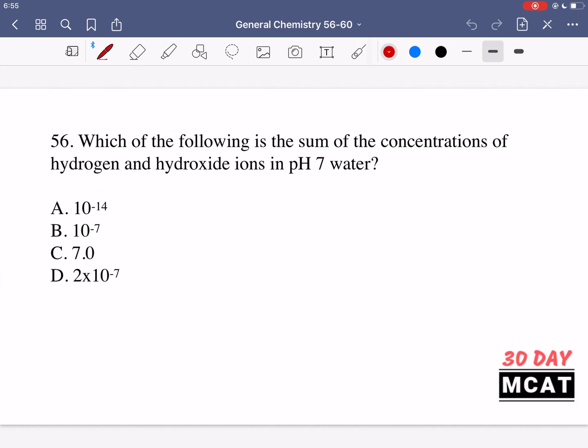In question 56 we're asked which of the following is the sum of concentrations of hydrogen and hydroxide ions in pH 7 water.